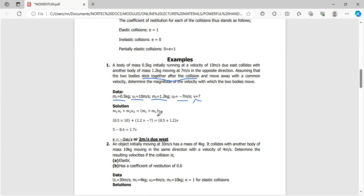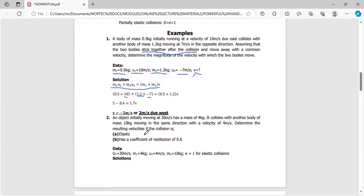For an inelastic collision, M1U1 plus M2U2 equals (M1 plus M2)V. Substituting: 0.5 times 10 plus 1.2 times negative 7. Simplifying, the other side is 0.5 plus 1.2 equals 1.7. This side gives 5 minus 8.4. The answer gives us V equals negative 2 m/s.